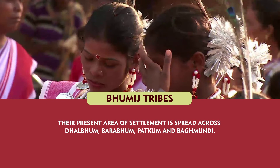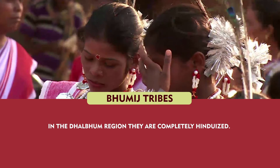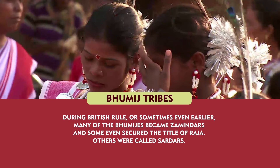Bhoomij tribes: In the western district of West Bengal, there are prominent groups of Bhoomijas. Although numerically they are considerably behind the Santals and Bauris, they live in the territory between the Kasai and Subarnareka rivers. In olden days they probably had settled north of the Kasai, possibly right up to Pancha court, but were pushed back by the Aryans represented by the Kurmis. Their present area of settlement is spread across Dalbhum, Bharabhum, Patkum and Bhagmundi. While those living nearer to the Chotanagpur plateau still retain linguistic links with Mundri, those living deeper east have adopted Bengali as their language. In the Dalbhum region, they are completely Hinduized. During British rule, many of the Bhoomijas became Zamindars and some even secured the title of Raja.